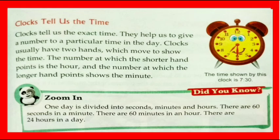Clocks tell us the exact time. They help us give a number to a particular time in the day. Clocks usually have two hands which move to show the time. The number at which the shorter hand points is the hour, and the number at which the longer hand points shows the minute.